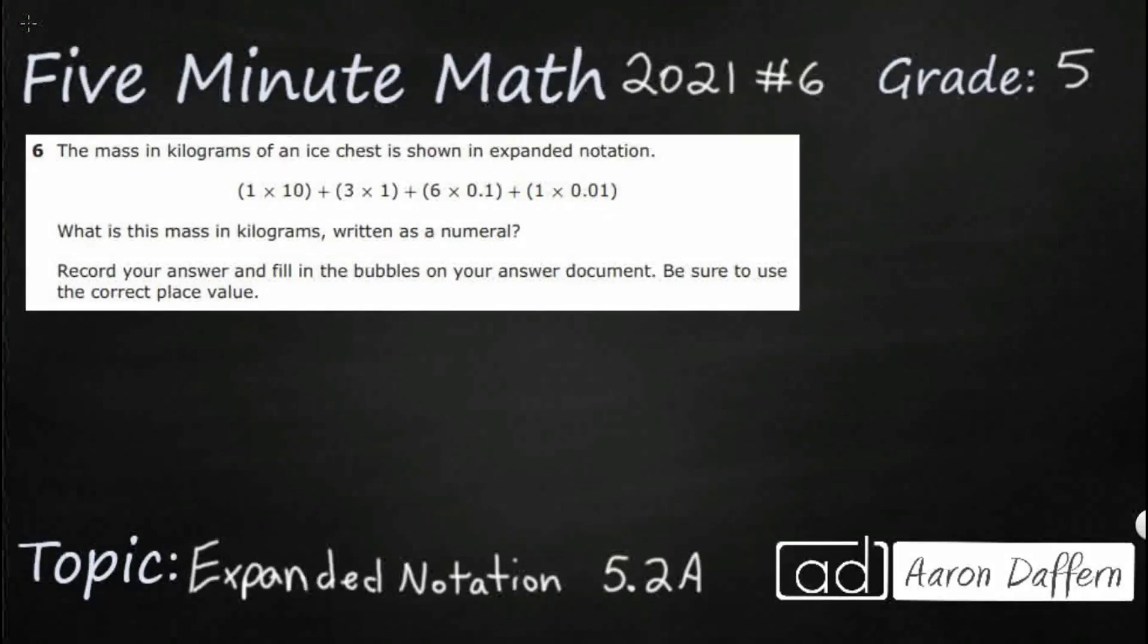Hello and welcome to 5-Minute Math. Today we are looking at the 5th grade concept of expanded notation, this is standard 5.2a in the great state of Texas, and we are using item number 6 off the 2021 released star test. If you have not done so already, please go ahead and take a moment to pause the video, work this problem out on your own, unpause it, and then we will look at our answers together.